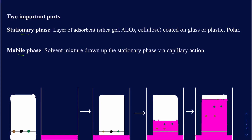We have a material that's going to be coated onto glass or plastic. The type of material used as the stationary phase will be either silica gel or aluminum oxide, also called alumina, and sometimes cellulose is used as well. Silica gel is slightly acidic, and aluminum oxide is slightly basic. So if you're trying to separate a compound that's basic in nature and you use silica gel, that basic compound will hold onto the silica gel stronger and may never come out of the stationary phase.